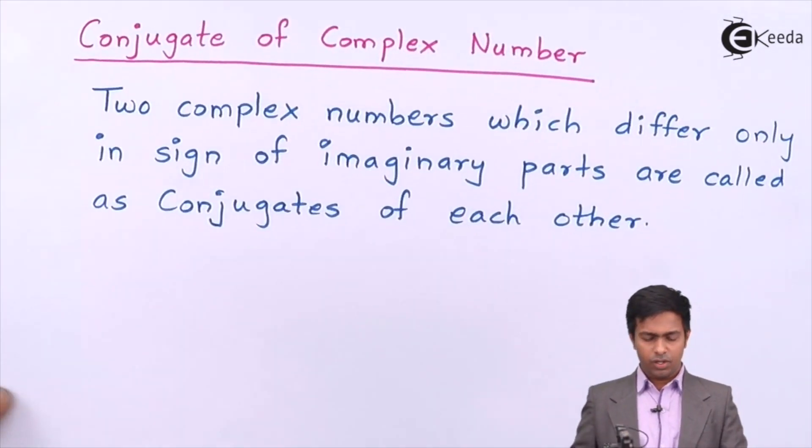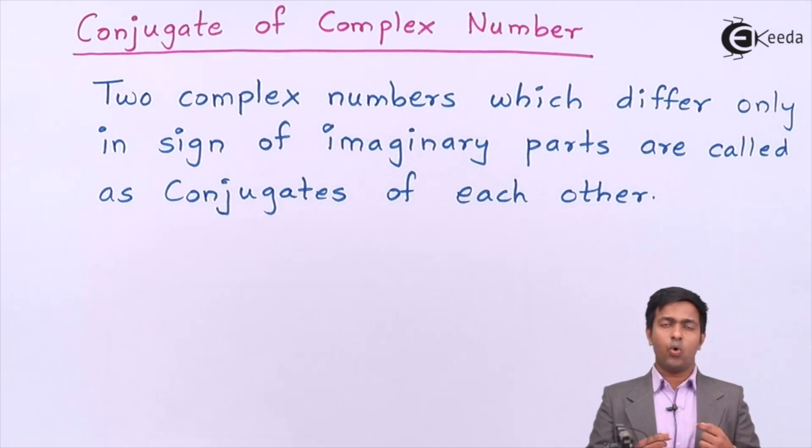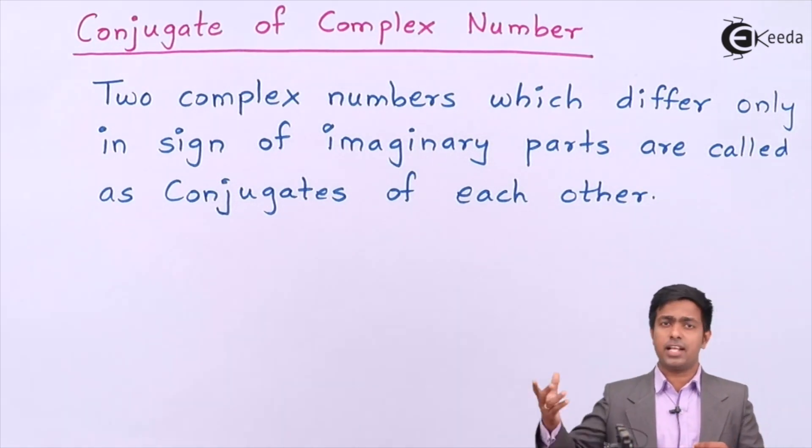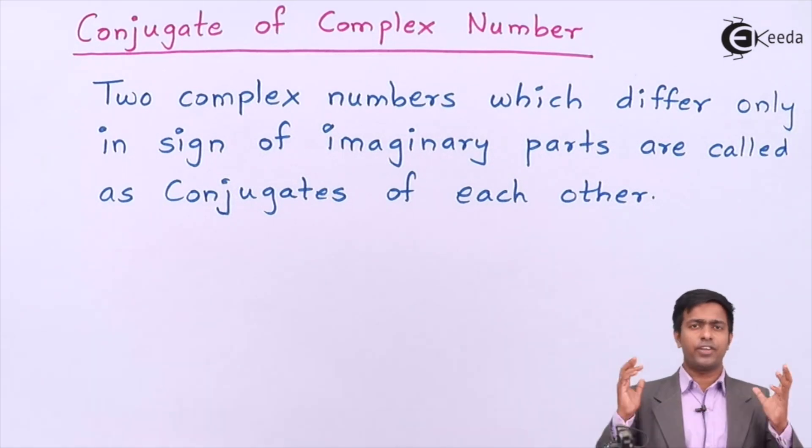Now we are going to learn a new concept of complex number which is called as conjugate of a complex number. What is conjugate of complex number? Two complex numbers which differ only in the sign of imaginary part are called as conjugates of each other.